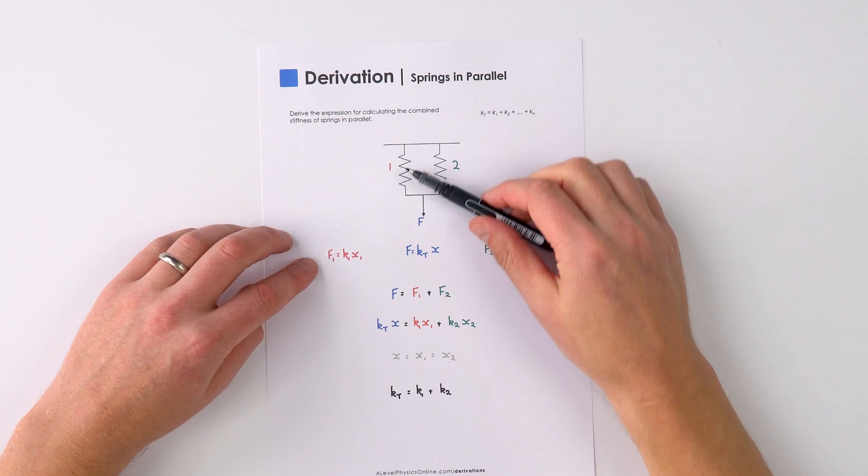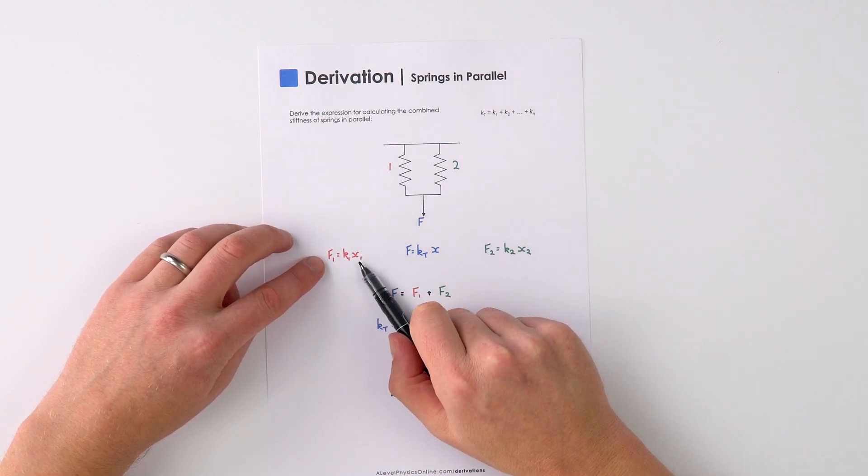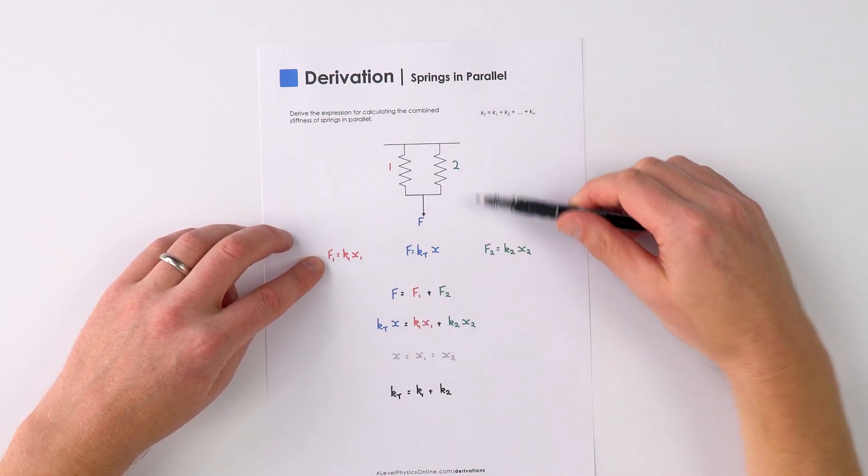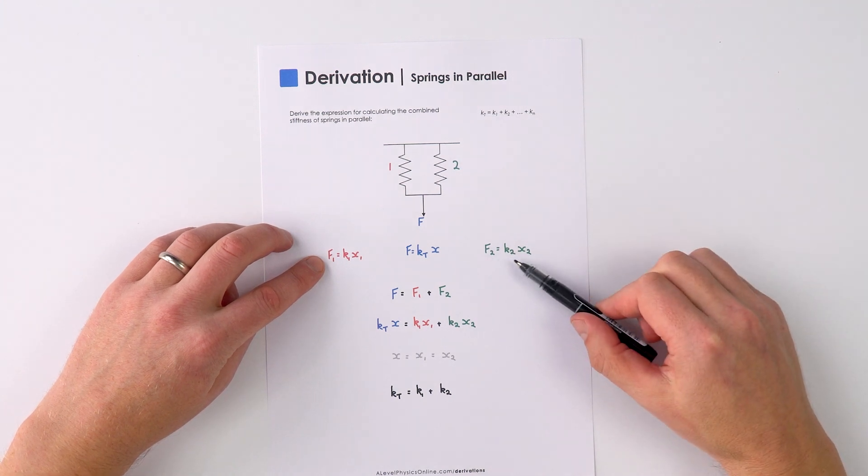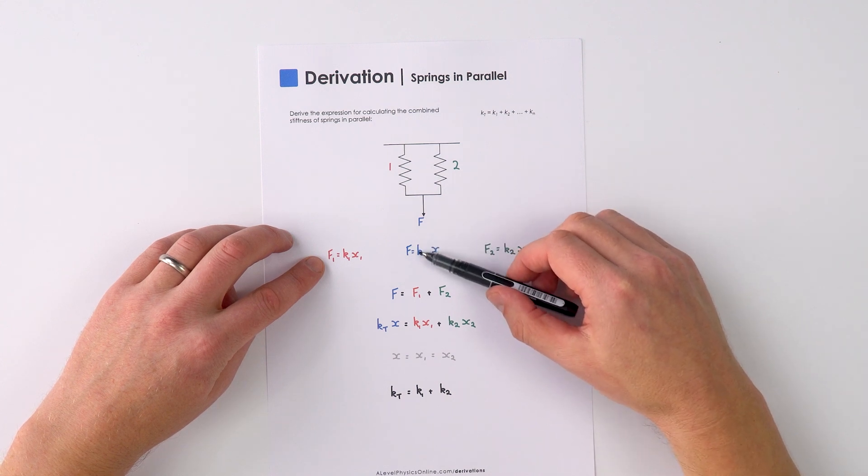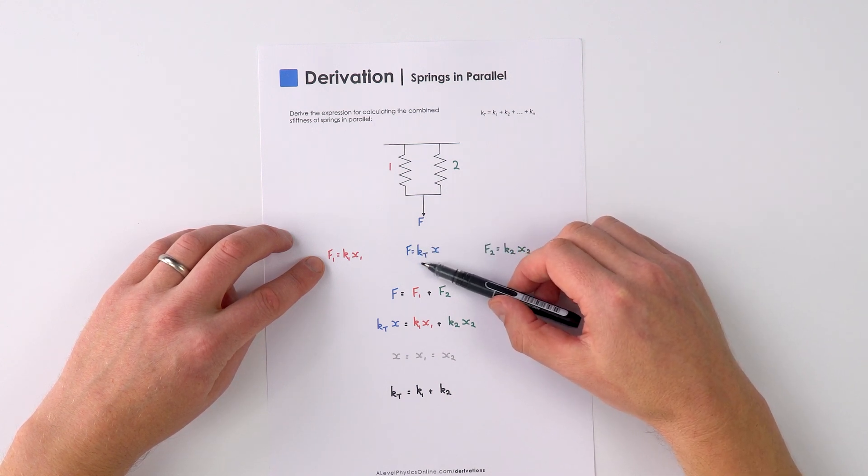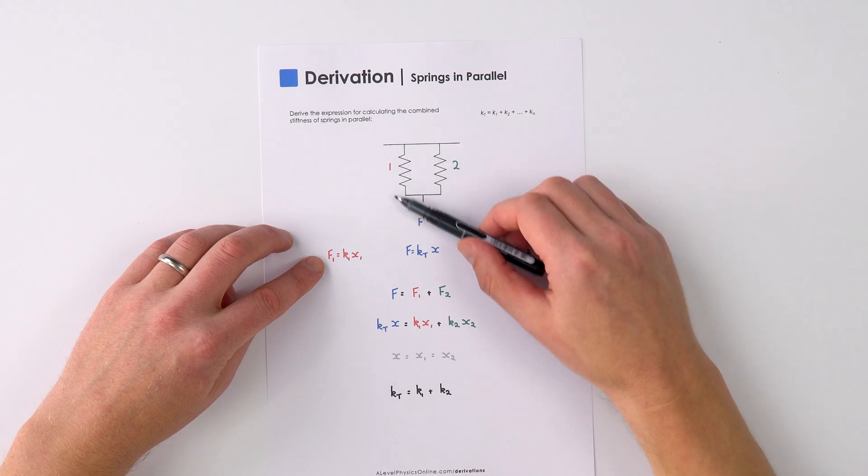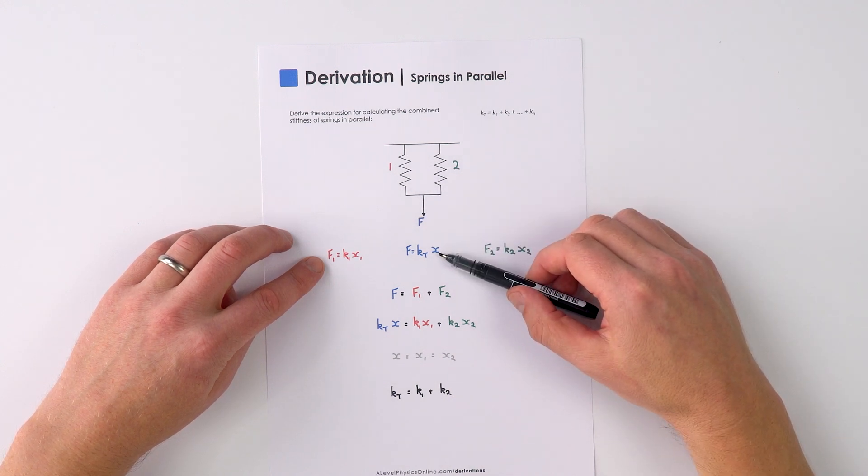Now for spring one, we know that F1 is equal to K1 X1 and for spring number two, F2 is equal to K2 X2. We also know that F is equal to KT, which is going to be the overall or total spring constant for this system times X.